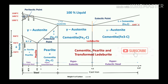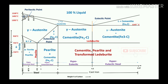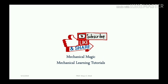Above the peritectic and eutectic reaction lines, it will be 100% liquid for any composition of carbon with iron. That is all regarding the iron-carbon diagram — this is the simplest way to draw it. Thank you very much. If you like it, subscribe and like.